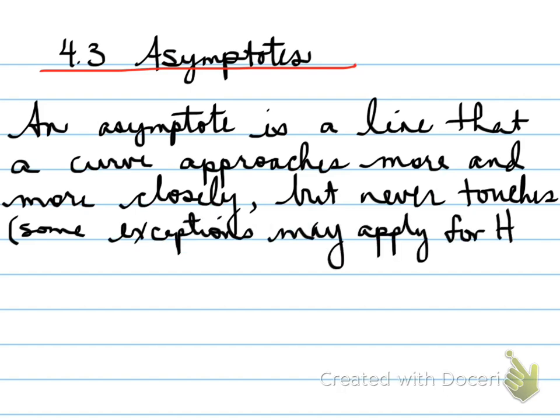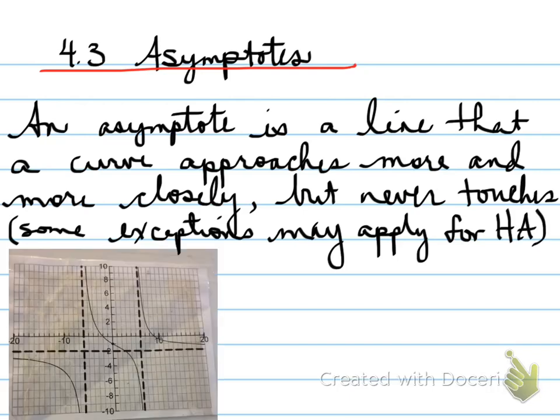Most exceptions apply to the horizontal asymptote. The vertical asymptote never gets crossed. Here's an example of where you'll see a horizontal asymptote being crossed by our diagram.